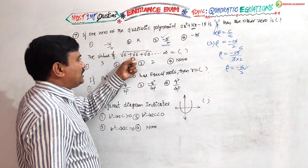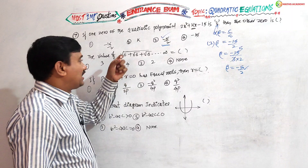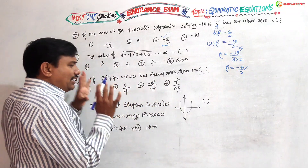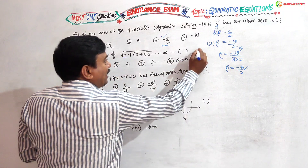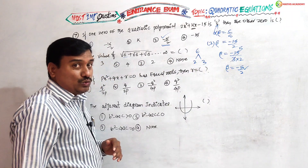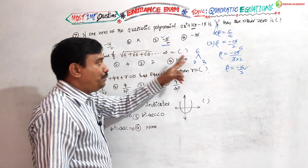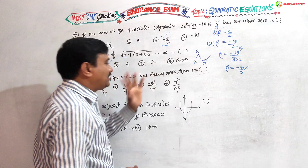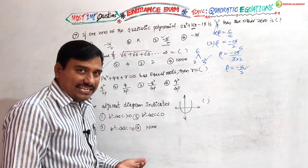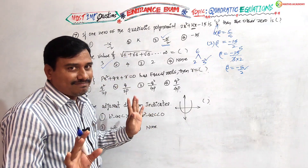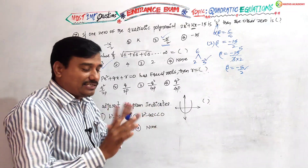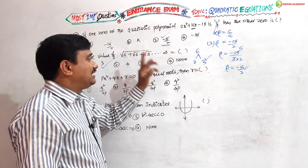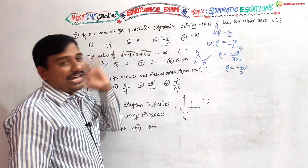Eighth question: find the value of root 6 plus root 6 plus root 6 and so on, infinitely. Here is the technique: find the factors of 6 — which are 2 and 3. If plus is there, the bigger number, 3, is the answer. If minus is there, the smaller number, 2, is the answer. If multiplication is there, the number itself is the answer. Use this technique without pen and paper.